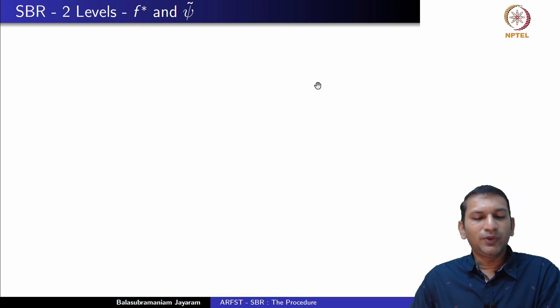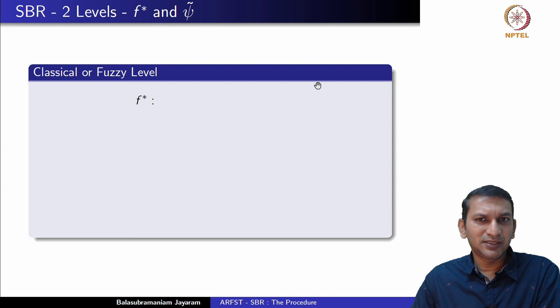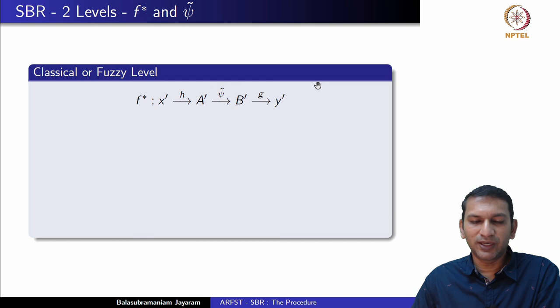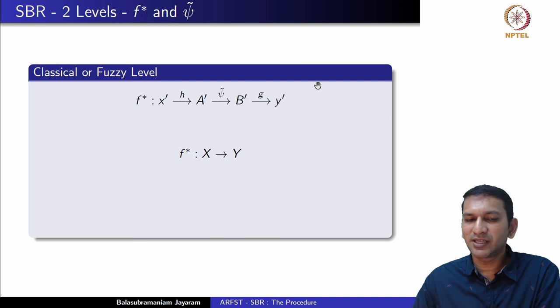Fuzzy inference mechanisms can be viewed at two levels. At the classical level, given x' from X, we apply the fuzzifier to get A' in F(X), apply the fuzzy inference mechanism Ψ̃ mapping F(X) to F(Y) to get B' in F(Y), then apply the defuzzifier to obtain y'. So f* is a mapping from X to Y — more like a classical function. Alternatively, we can view the fuzzy inference mechanism purely as a mapping between fuzzy sets, from F(X) to F(Y).